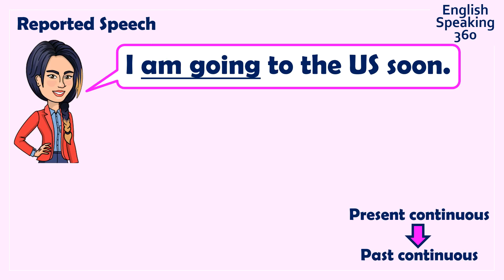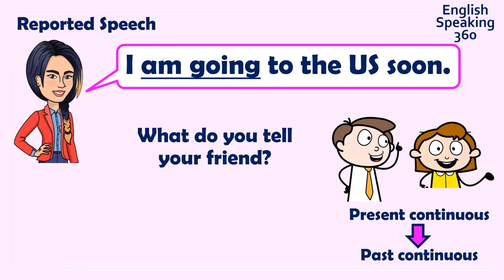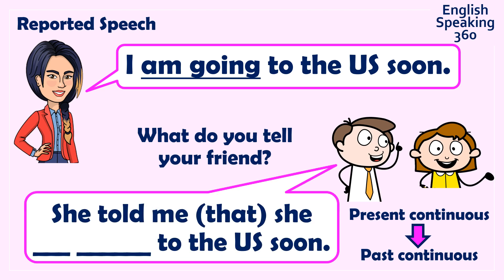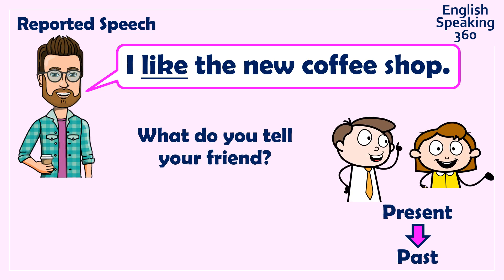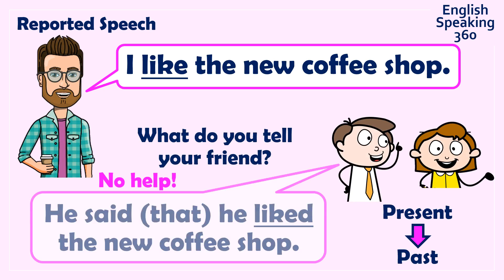Practice: 'I am going to the US soon.' What do you tell your friend? She told me she was going to the US soon. Next: 'I like the new coffee shop.' What do you tell your friend? Now there is no help — you have to make the sentence. He said he liked the new coffee shop.